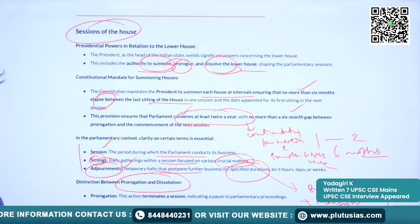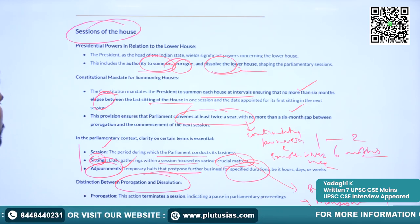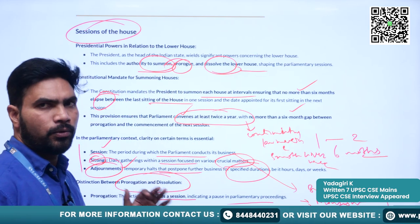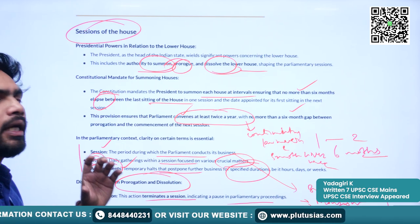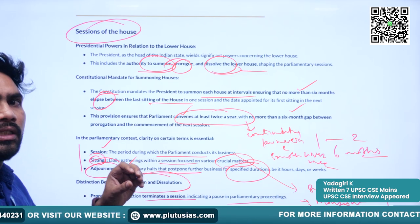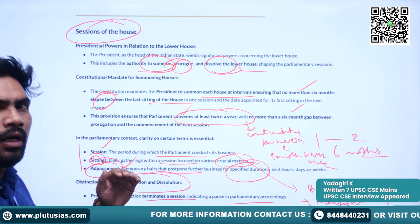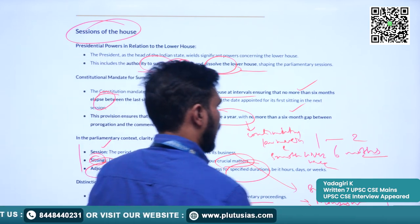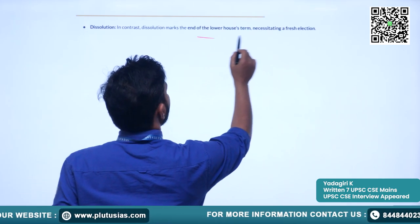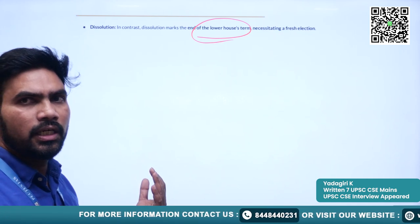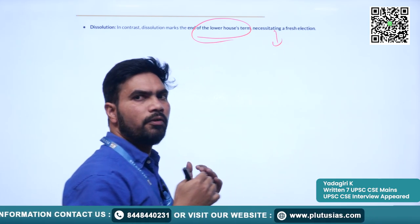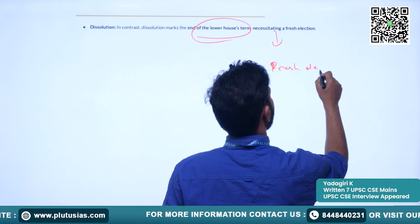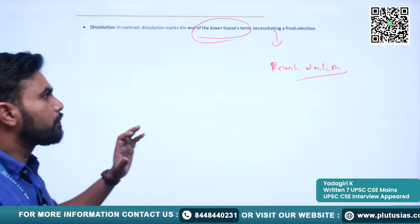Now let's understand the difference between prorogation and dissolution. Prorogation means the termination of a session, indicating a pause in parliamentary proceedings — temporarily, for certain months, the activities of Parliament are suspended. However, dissolution ends the lower house's term, necessitating a fresh election. If the Lok Sabha is dissolved, it requires a fresh election. This is the basic difference between prorogation and dissolution.